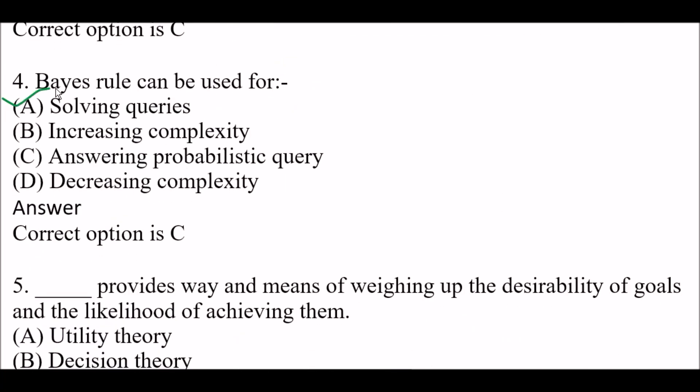Next question: Bayes rule can be used for — Option A: Solving queries, Option B: Increasing complexity, Option C: Answering probabilistic query, Option D: Decreasing complexity. Right answer is Option C — answering probabilistic query.